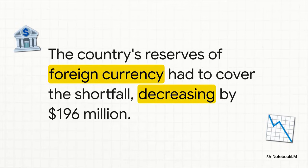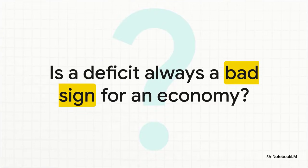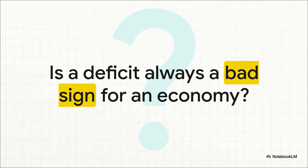That's our bottom line. What does a negative number like that actually mean in the real world? It means that to cover that $196 million difference, the country had to dip into its savings of foreign money — its reserves. The books always have to balance, one way or another. And since more money went out than came in, the difference had to come out of the nation's own piggy bank. We ended up with a deficit — but is that automatically a bad thing? Not necessarily. A fast-growing country might run a deficit because it's importing tons of machinery to build new factories. The number itself doesn't tell you the whole story — the real work is in understanding the story behind the number.